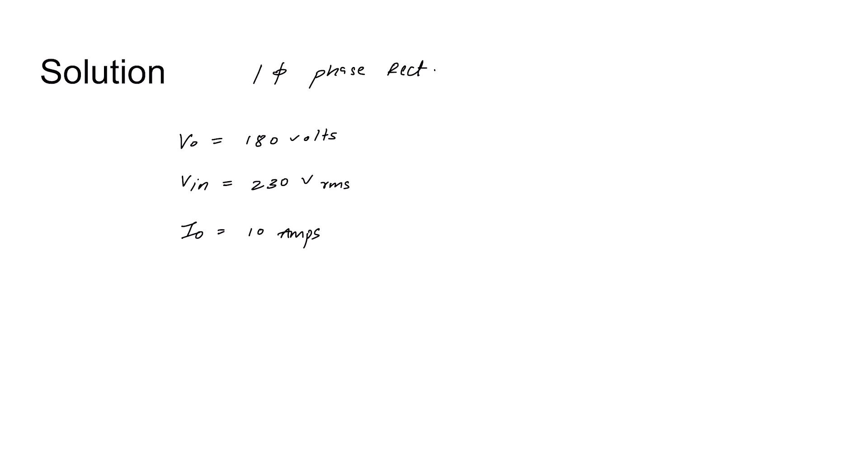Therefore, the source current waveform will look like this. Rms of 10 amps. Note that the Rms value of I_source is 10 amps only. This is the firing angle alpha.